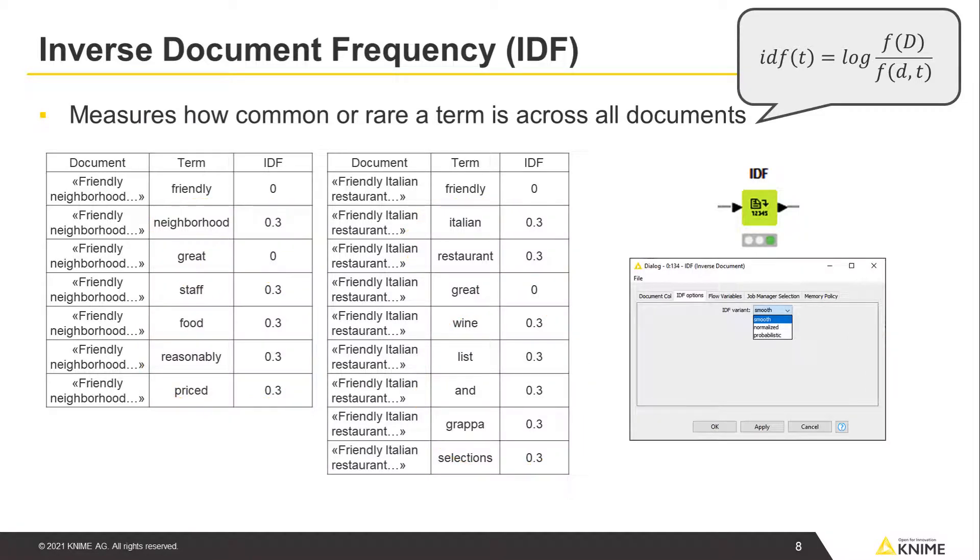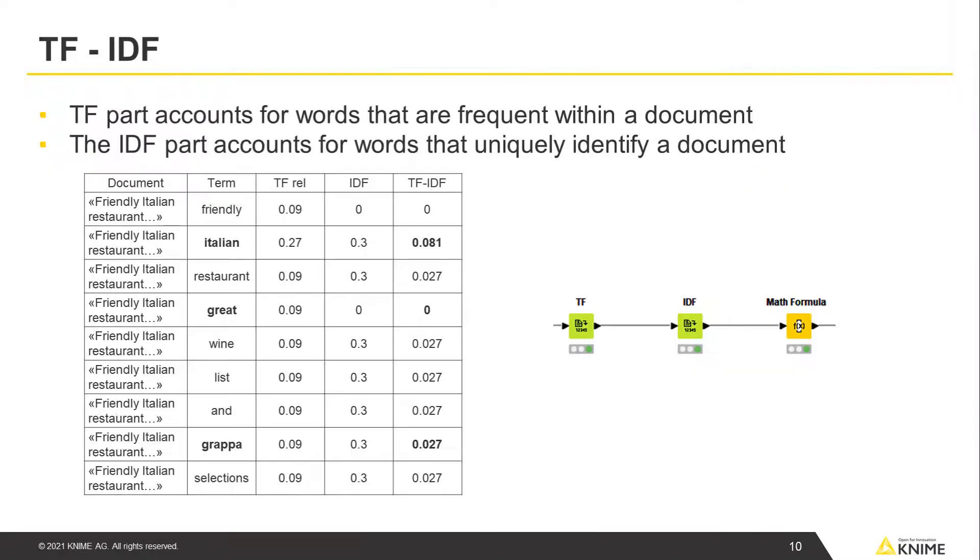The IDF has three variations: normalized, smooth, and probabilistic. Smooth IDF is selected by default in the IDF node, since it avoids zero scores for terms that occur in all documents in the corpus.